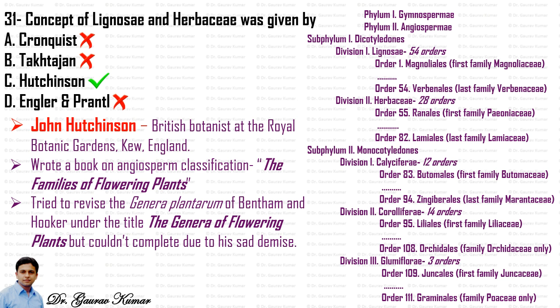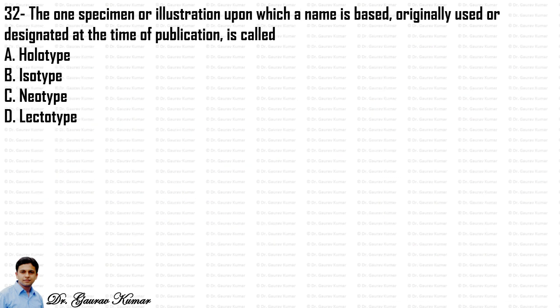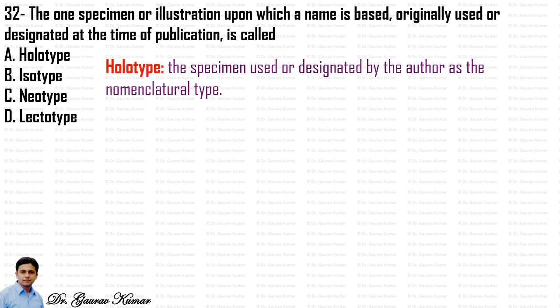He tried to revise the 'Genera Plantarum' of Bentham and Hooker under the title 'The Genera of Flowering Plants' but couldn't complete it due to his sad demise. Next question: the specimen or illustration upon which a name is originally based or designated at the time of publication is called — we will examine the definition of each option.